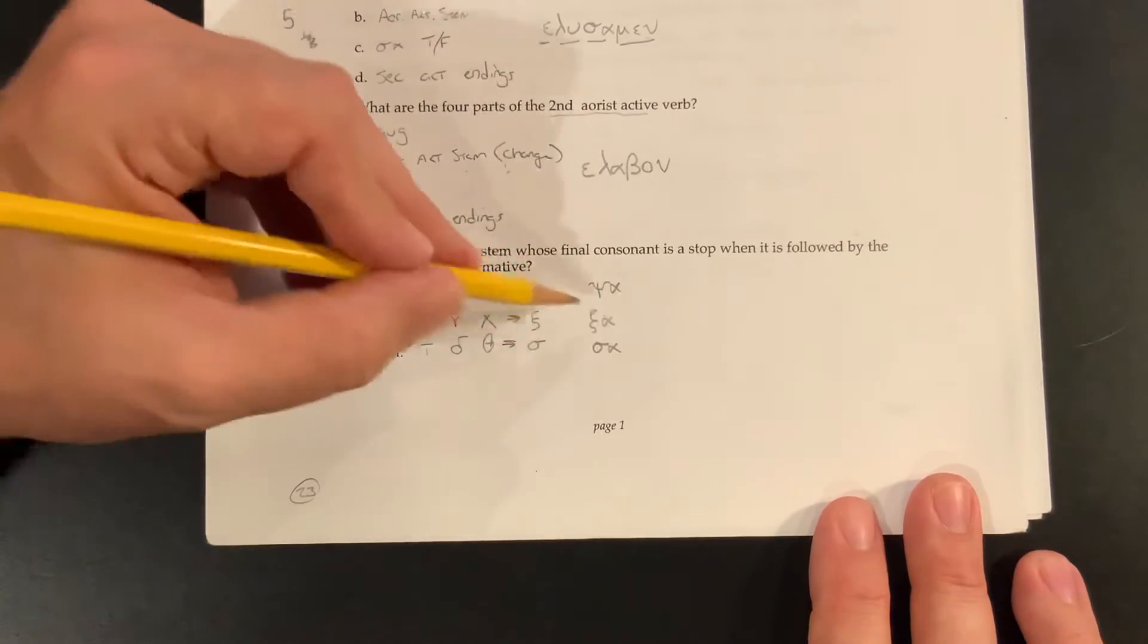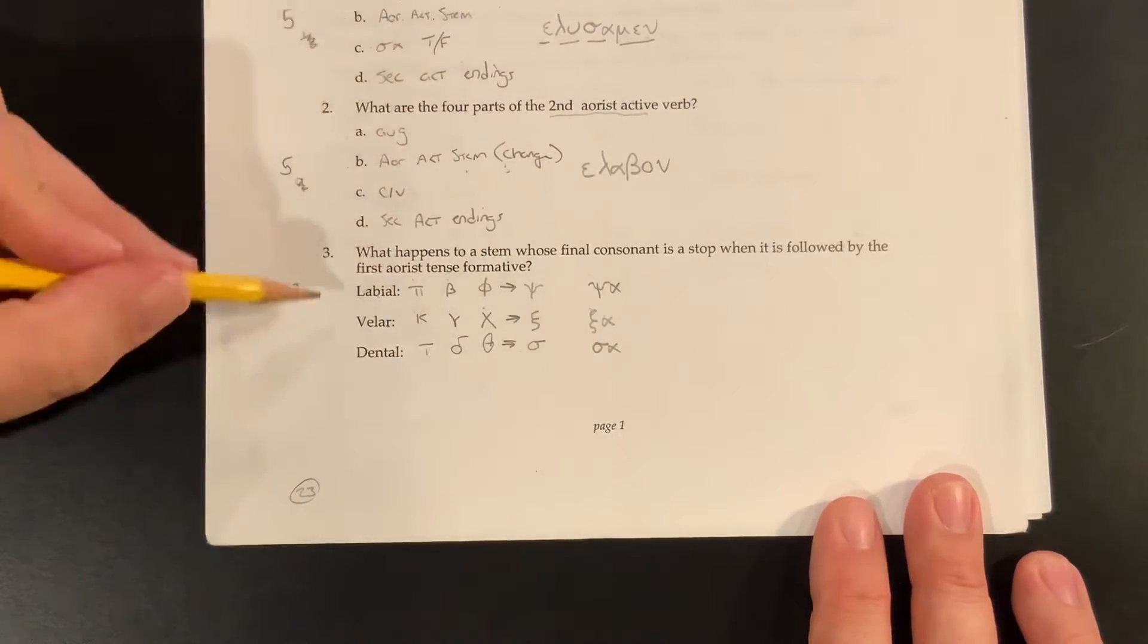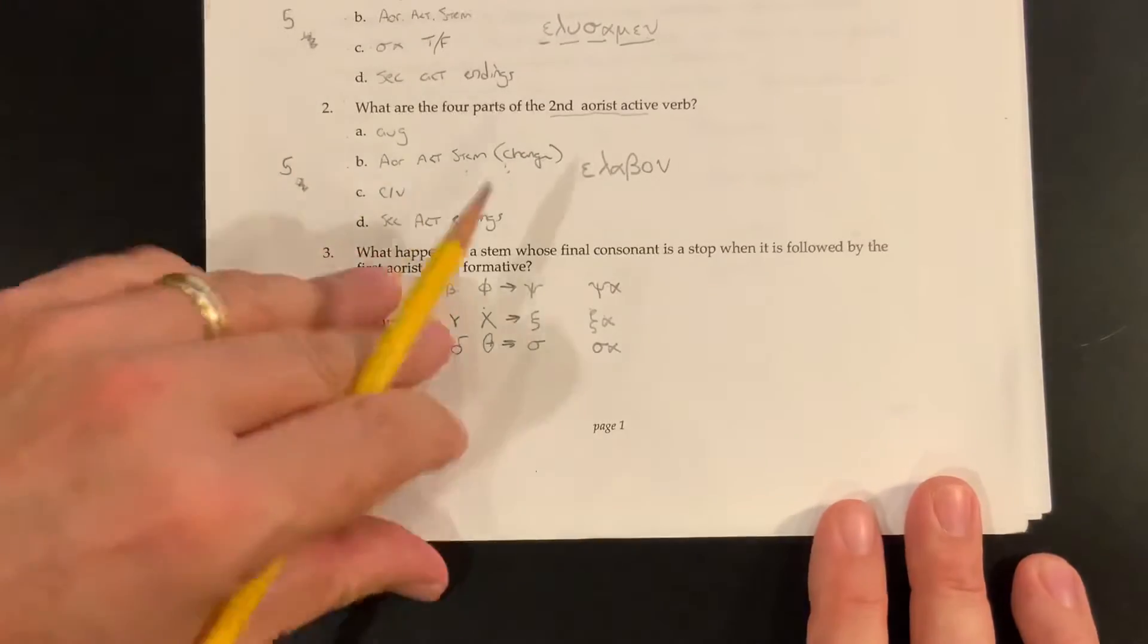But if you don't have that or something like that, then mark it incorrect. That's worth three possible points. Okay, let's keep going to the next page.